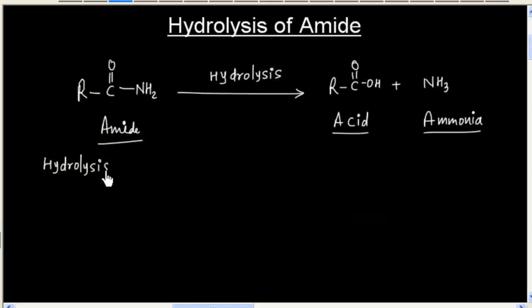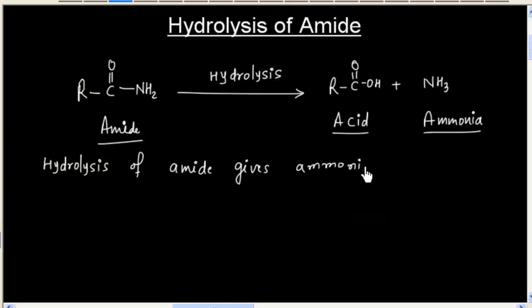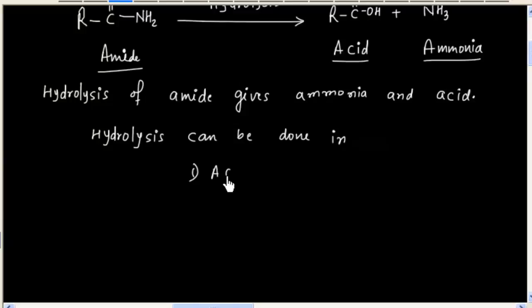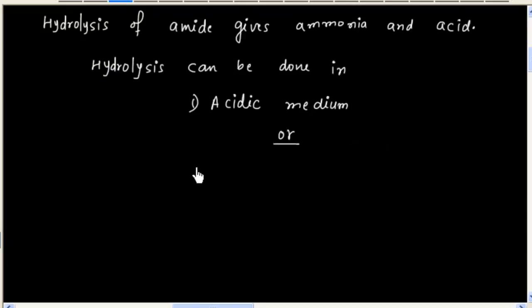Hydrolysis of amide gives ammonia and acid. Hydrolysis can be done in acidic medium or it can also be done in basic medium.